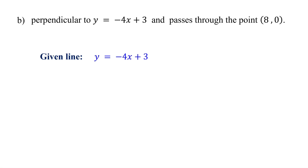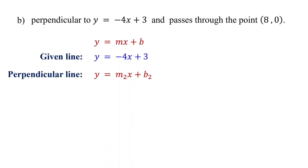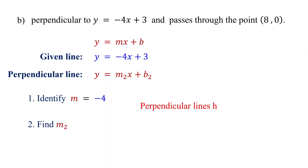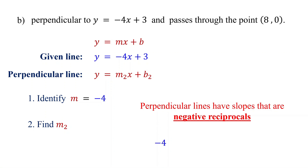The given line is y equals negative 4x plus 3, which is in slope-intercept form. Represent the perpendicular line as y equals m2x plus b2. First, identify the slope of the given line. It is negative 4, so m equals negative 4. Next, find the slope of the perpendicular line. Since perpendicular lines have slopes that are negative reciprocals, take the reciprocal of the slope of the given line and then change the sign. The slope of the given line is negative 4, which in fraction form is negative 4 over 1. To find its reciprocal, just flip it. Then change the sign of the reciprocal. So the slope of the perpendicular line is one-fourth.